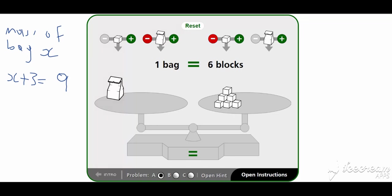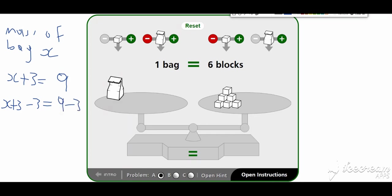So let us do it algebraically. We have x plus three equals nine. Our job is to find x, so we only need x on the left-hand side — that three needs to go. What we do is subtract three from that side, but then the right-hand side would be unbalanced, so we subtract three from that side as well. Three minus three equals zero, which leaves x on the left, and this equals six on the right.